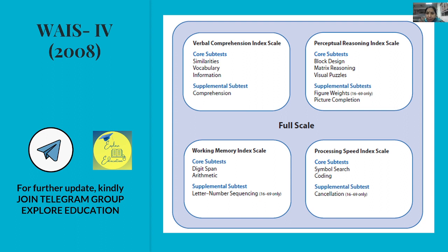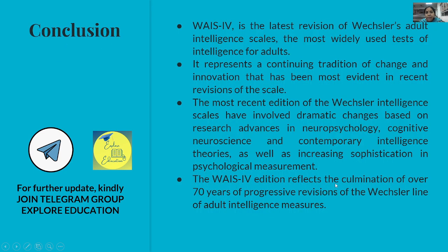Looking at the WAIS-4 diagram: Full Scale IQ is composed of four indices — VCI, PRI, WMI, and PSI. The core subtests include: Similarities, Vocabulary, Information (VCI); Block Design, Matrix Reasoning, Visual Puzzles (PRI); Digit Span, Arithmetic (WMI); Symbol Search, Coding (PSI). Supplemental subtests do not contribute to the core IQ score.